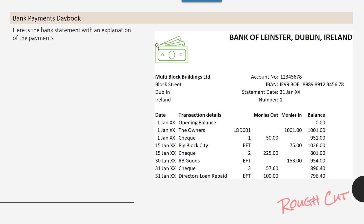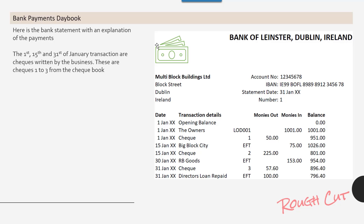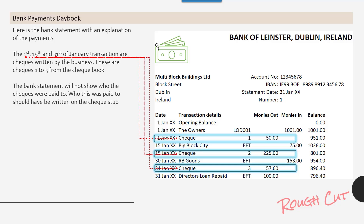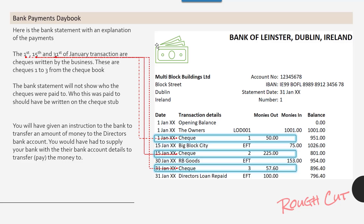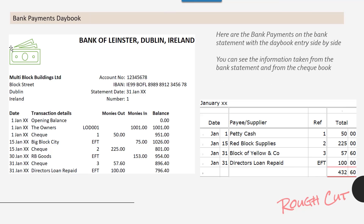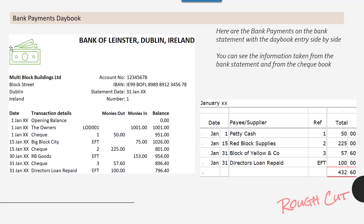Here's the bank statement with an explanation of the payments. The 1st, 15th, and 31st of January transactions are checks written by the business — checks one, two, and three from the checkbook. The bank statement will not show who the checks were paid to; that should have been written on the check stub. You would have given an instruction to the bank to transfer money to the director's bank account, supplying the bank account details. Here's the manual handwritten bank payments day book and the bank statement entries shown side by side, with information taken from both the bank statement and the checkbook.